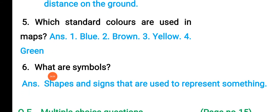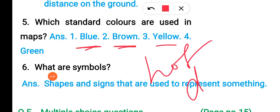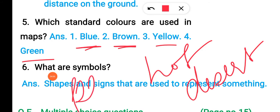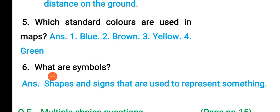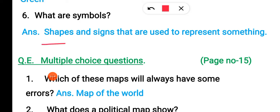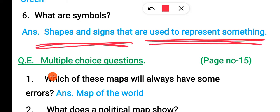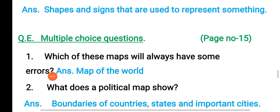Which standard colors are used in maps? Blue color is used for water, brown for mountains, yellow for hot desert, and green for plains. What are symbols? Shapes and signs that are used to represent something are called symbols.